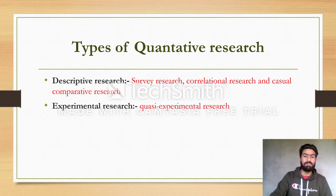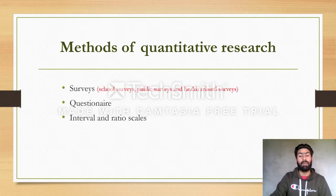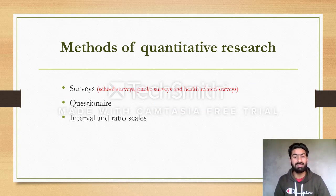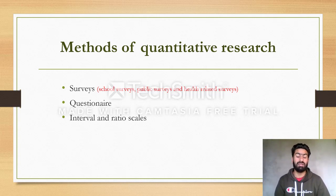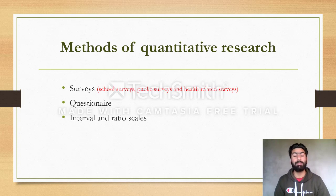Now let's look at the methods of quantitative research. The first method is surveys. Surveys include several subtypes such as school surveys, public surveys, and health-related surveys.